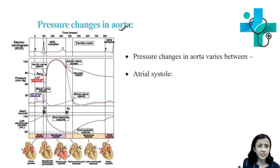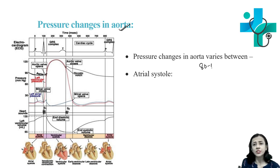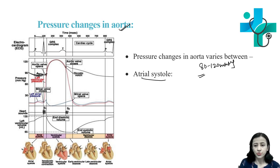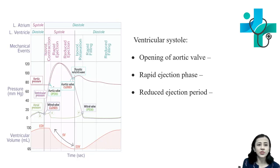Next is pressure changes in the aorta. This curve shows pressure changes in the aorta. A very important thing is that aortic pressure fluctuates between 80 to 120 mmHg only — it will not go less than 80 mmHg. This can be recorded using a catheter. During atrial systole, aortic pressure is around 80 mmHg.